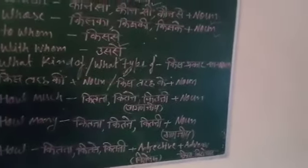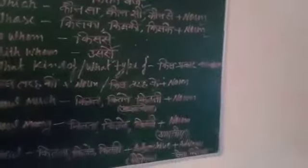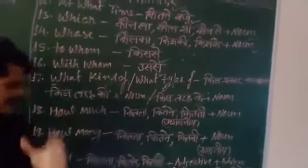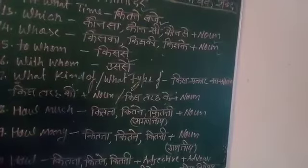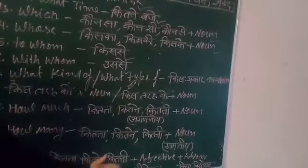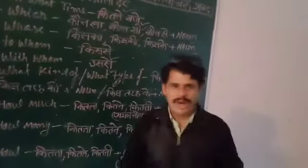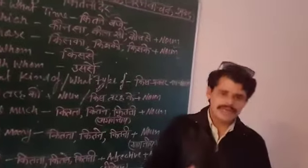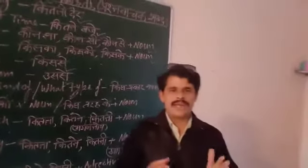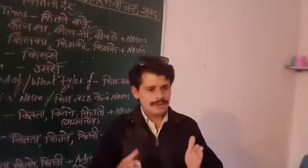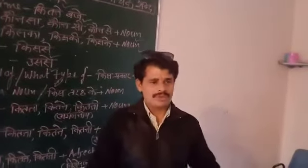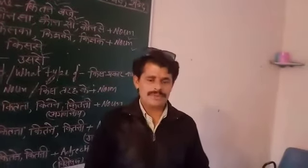Adjective means a describing word, and verb means an action word. 'How' can be used before an adjective in English questions. If you like my videos, please share and subscribe to my channel. Thank you for watching my videos.